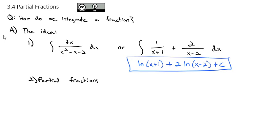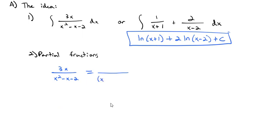The idea of partial fractions says I can take a fraction like 3x over x squared minus x minus 2, and that's going to equal a sum of fractions. If we factor that denominator, we'll end up with x plus 1 times x minus 2, and the numerator is still 3x. The idea is this fraction is the sum of some numerator A over the first factor x plus 1, plus another numerator B over the second factor x minus 2.